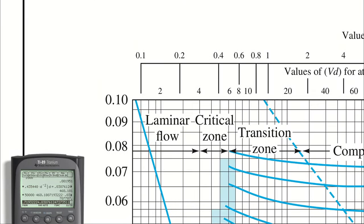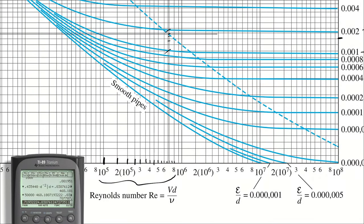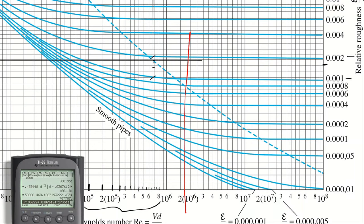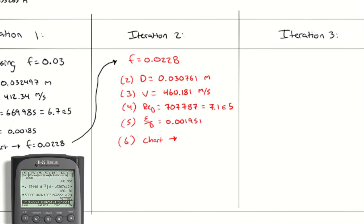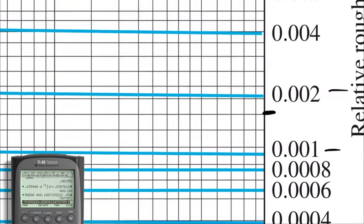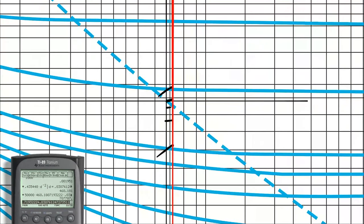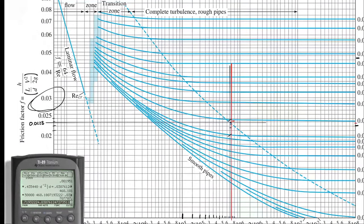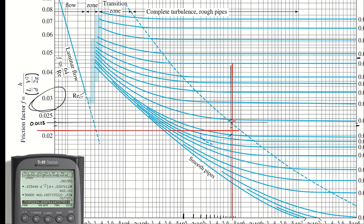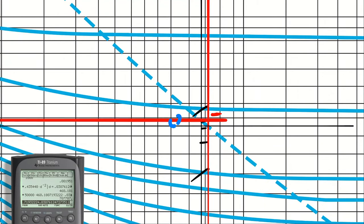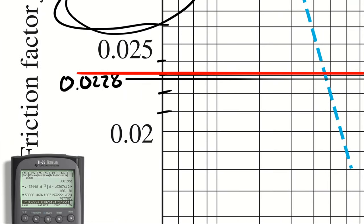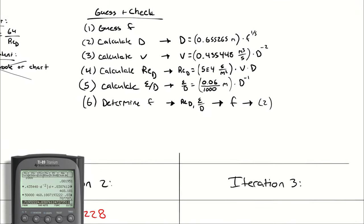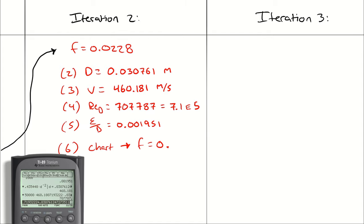I locate 7.1 times 10 to the fifth on the chart with a vertical line. My new relative roughness of 0.0019 is very close to 0.002, so I choose right about there and draw another horizontal line. We're getting relatively close to convergence, so my ability to read the chart precisely matters a lot. That gives me approximately F = 0.023.